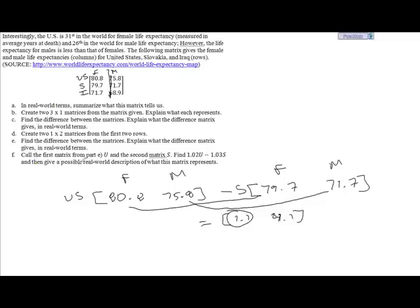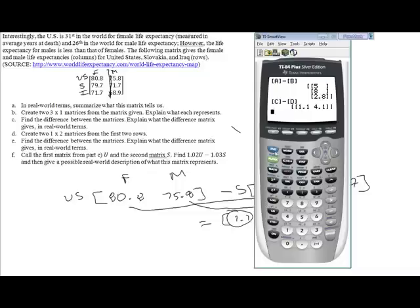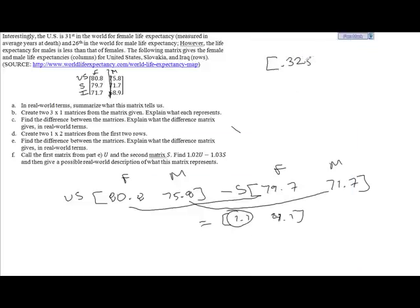The next thing we want to do is we want to call the first matrix from part E U and the second matrix S. Find 1.02 U minus 1.03 S and then give a possible real world description of what this matrix represents. I'm going to insert a 1.02 and over here I'm going to insert a 1.03. My matrix is 0.325, 3.4625.